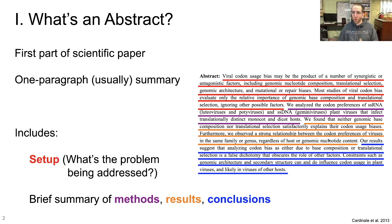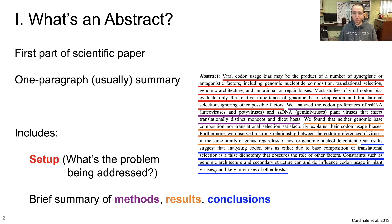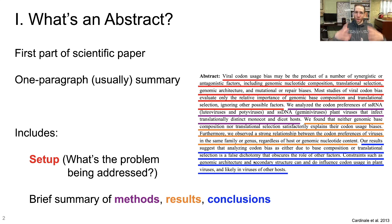And then let's wrap it up — what's the conclusion? Our results suggest that analyzing codon bias as either due to base composition or translational selection is a false dichotomy that obscures the role of other factors. Constraints such as genomic architecture and secondary structure can and do influence codon usage in plant viruses and likely in viruses of other hosts. So this is the structure of an abstract: you set up a problem, briefly describe what you did, the direct results, and the broader conclusions, all in a single paragraph right at the top of your paper.